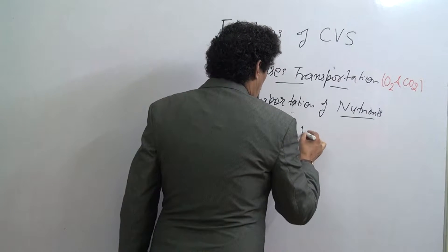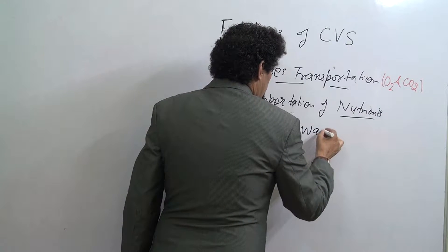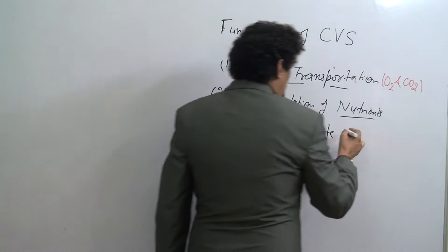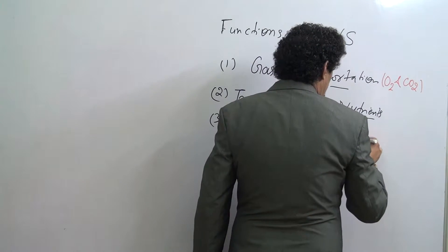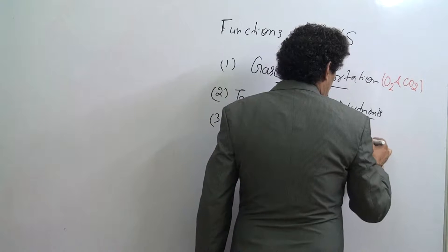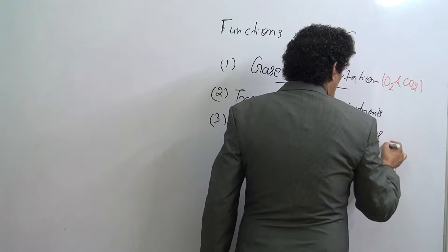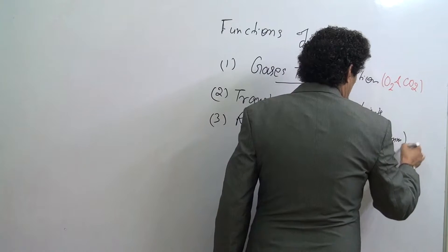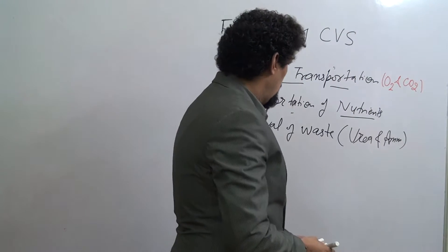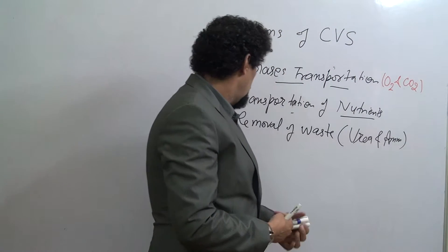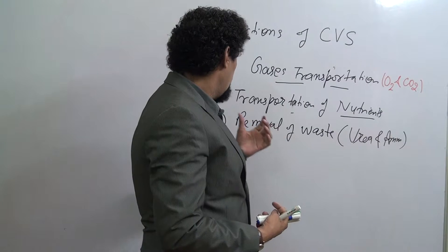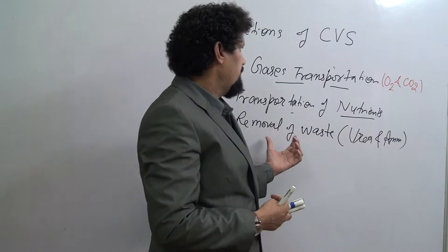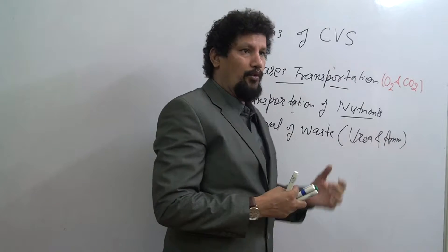The third important function is the removal of metabolic waste products such as urea and ammonia — especially in lower animals. These metabolic waste products are excreted via the cardiovascular system.